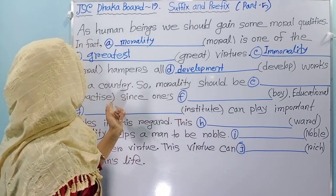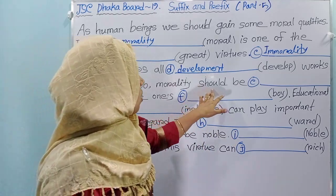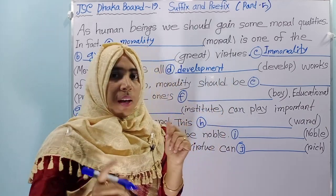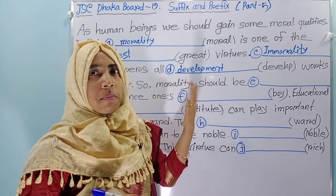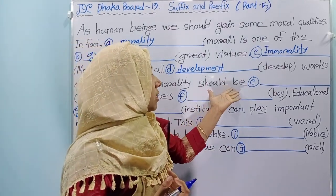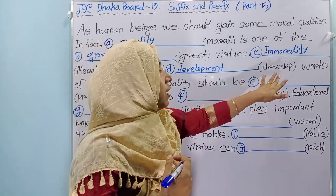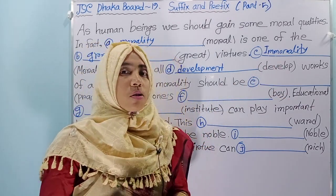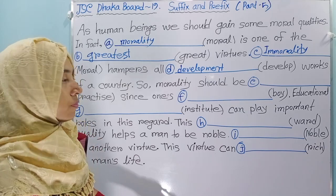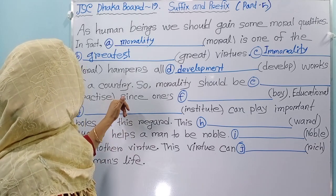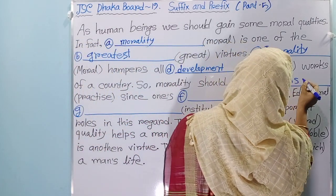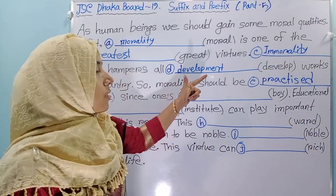Morality should be — that's practiced. Here you see a modal verb 'should'. Keep in mind, when you see any modal verb — it may be can, could, may, might, shall, should, will, would — and after that if you see 'be', you have to use the past participle form of the verb. So what is the past participle form of practice? You just add one D — that means 'practiced'. So, morality should be practiced.